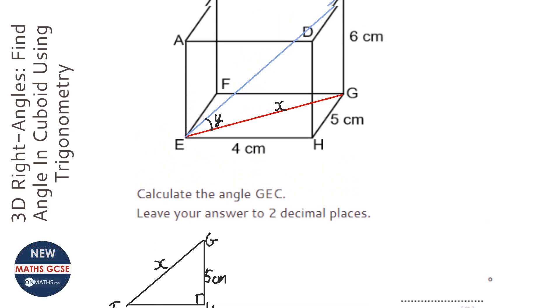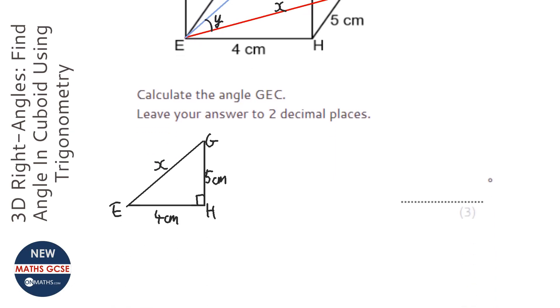Then I'm going to draw out the other triangle, which is triangle CEG. Let's see, there's E and G, and we've called this one Y, we've called this one X, and the height of it is six centimeters.